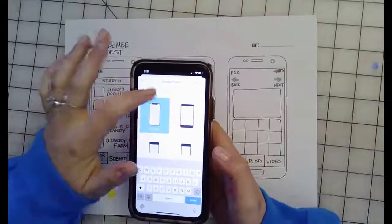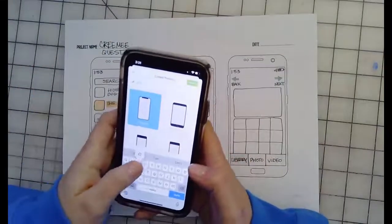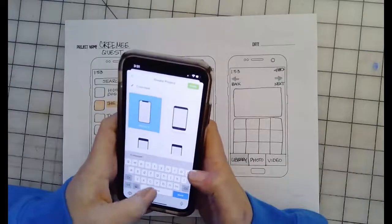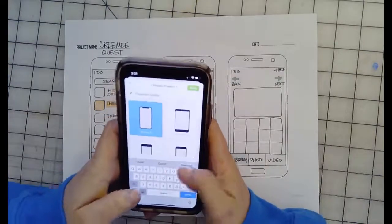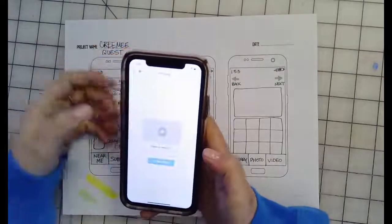So I'm choosing iPhone X. I'm going to name my project the name of the app I've created, which is called Creamy Quest, and then tap done.